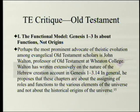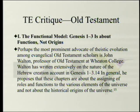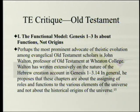The functional model: Genesis 1-3 is about functions, not origins. Perhaps the most prominent advocate of theistic evolution among evangelical Old Testament scholars is John Walton, professor of Old Testament at Wheaton College. Walton has written extensively on the nature of the Hebrew creation account in Genesis 1-3. In general, he proposes that these chapters are about assigning roles and functions to the various elements of the universe, and not about the historical origins of the universe.